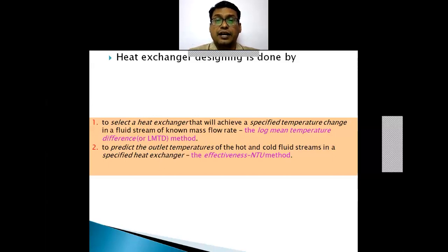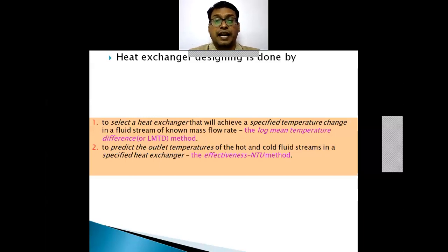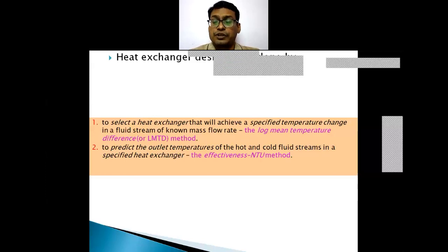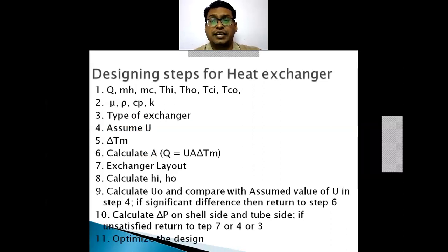The second method is to predict the outlet temperature of hot and cold fluid streams in a specified heat exchanger. That means you have a heat exchanger and you do calculations to find the outlet temperature for hot and cold fluid. This method is called the Number of Transfer Units (NTU) method. First we will see the log mean temperature difference method, which is the most common method for stepwise heat exchanger designing.